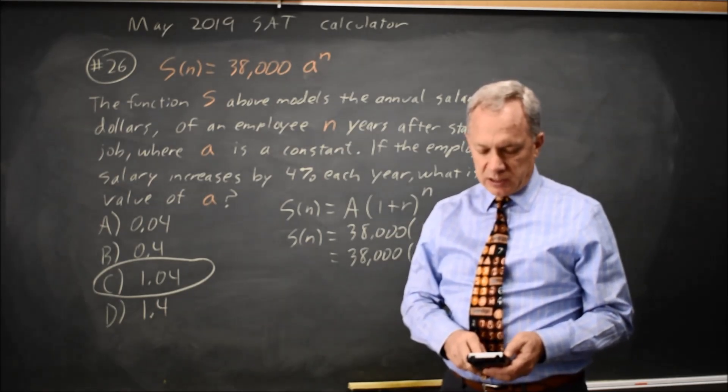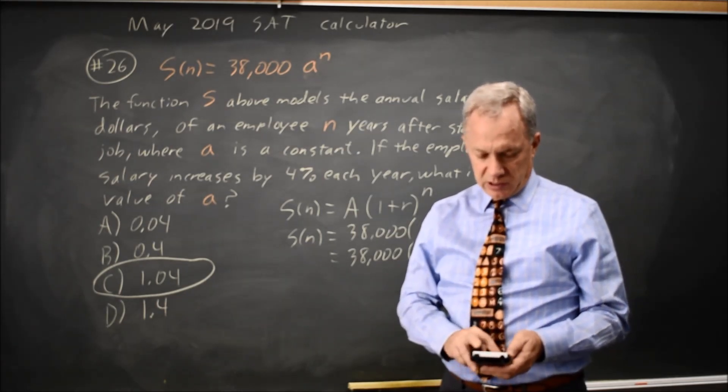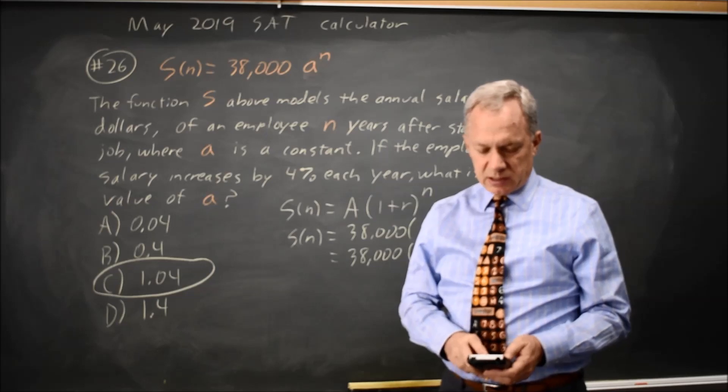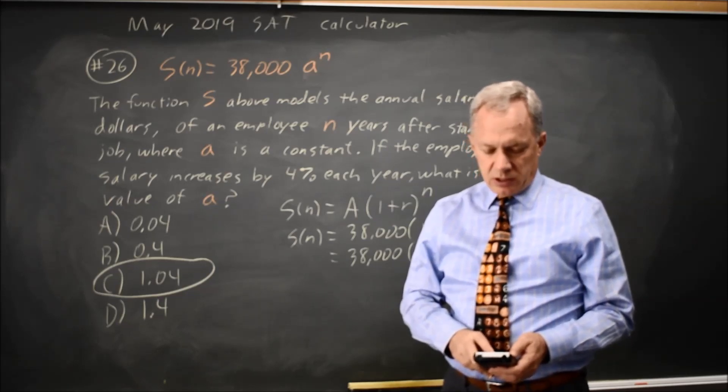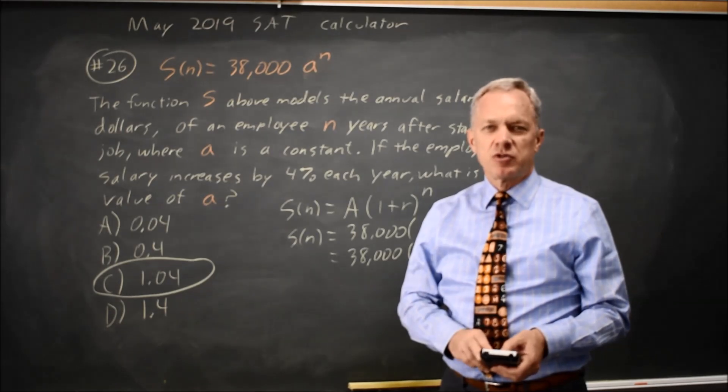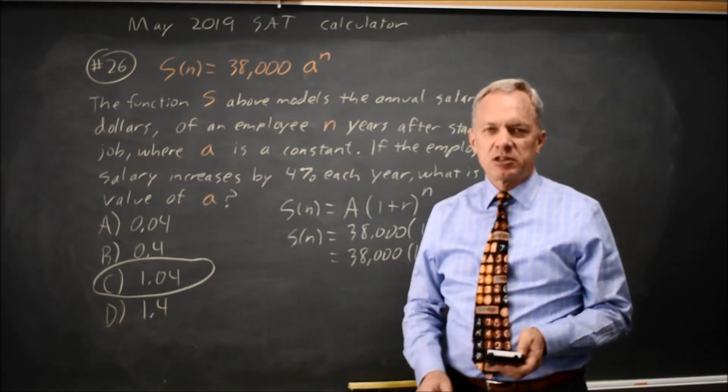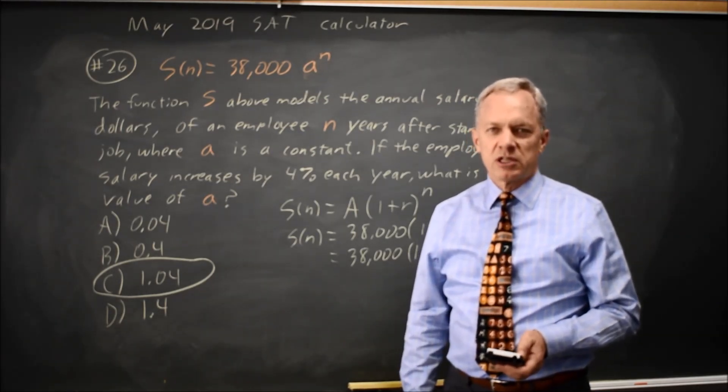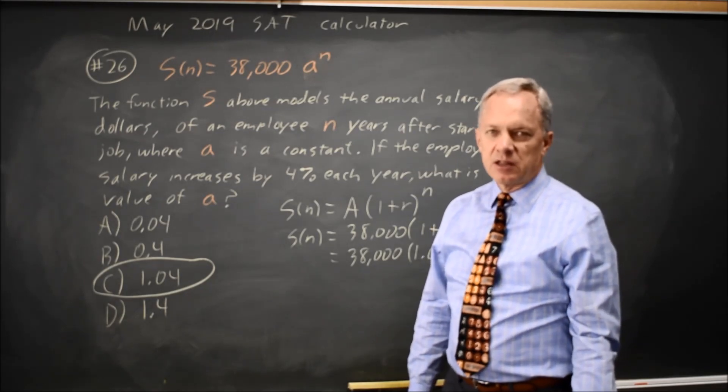If you tried 1.4 to the X, you go 38,000, 53,000, 74,000. That is substantially more than 4% growth, so that does not match either.